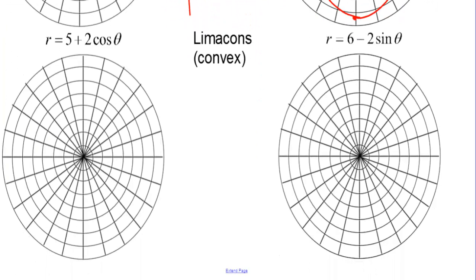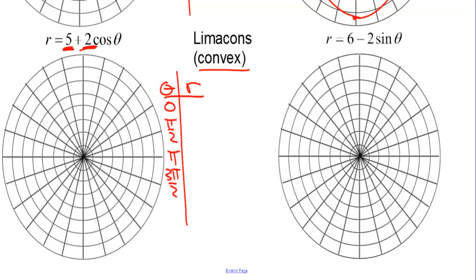For convex limaçons, notice that 5 is 4 or more — meaning it's twice that 2 or more. When this outer coefficient doubles the inner number, we have a convex limaçon. For r equals 5 plus 2 cosine theta: at 0, cosine is 1, so r is 7. Pi over 2, cosine is 0, so r is 5. Pi, cosine is negative 1, so r is 3. At 3 pi over 2, r is 5, and at 2 pi, r is 7. Because 5 is more than twice 2, this is going to be a convex limaçon. Starting at the wide end at 7, going slightly convex to the closest point at 3, and coming back around.